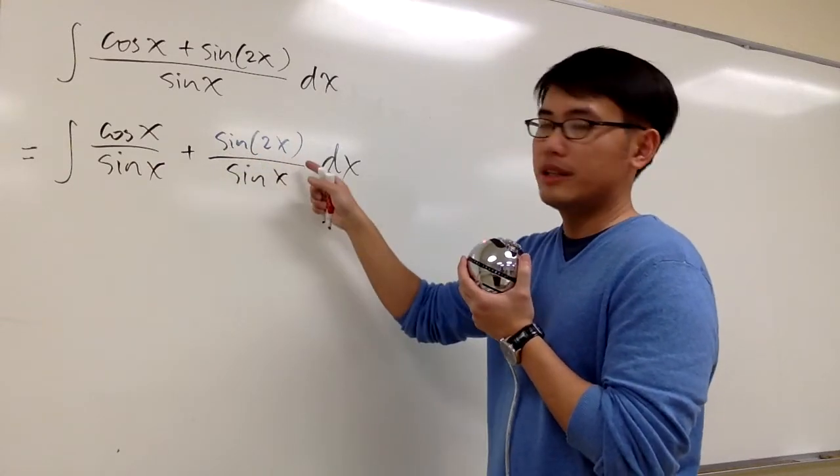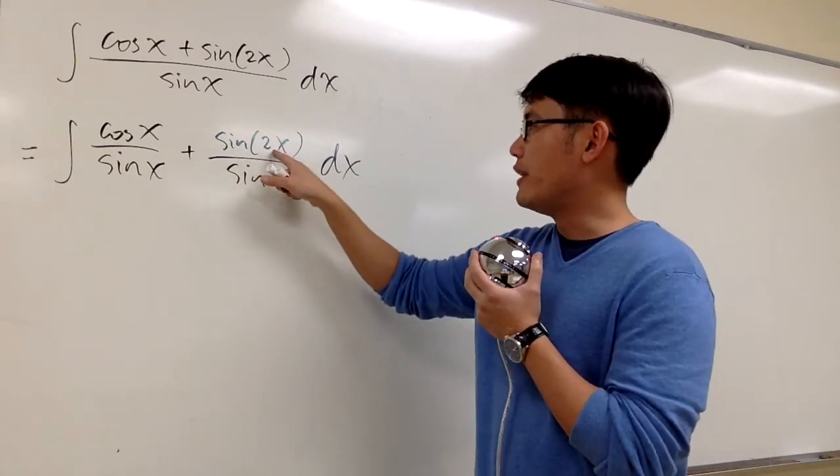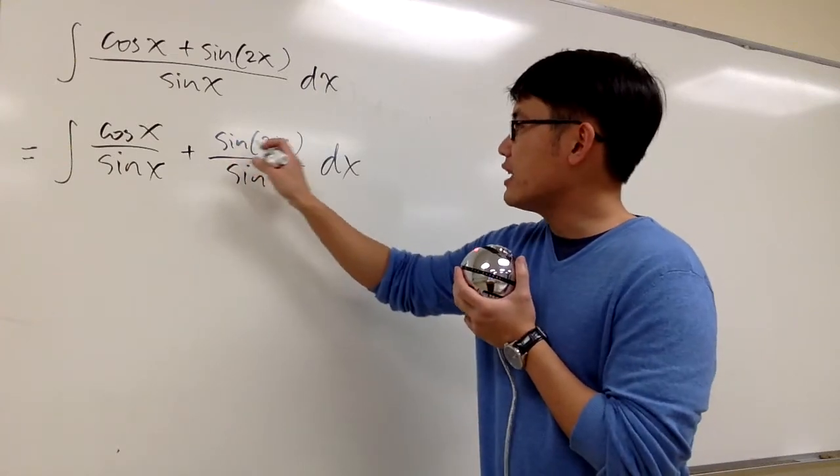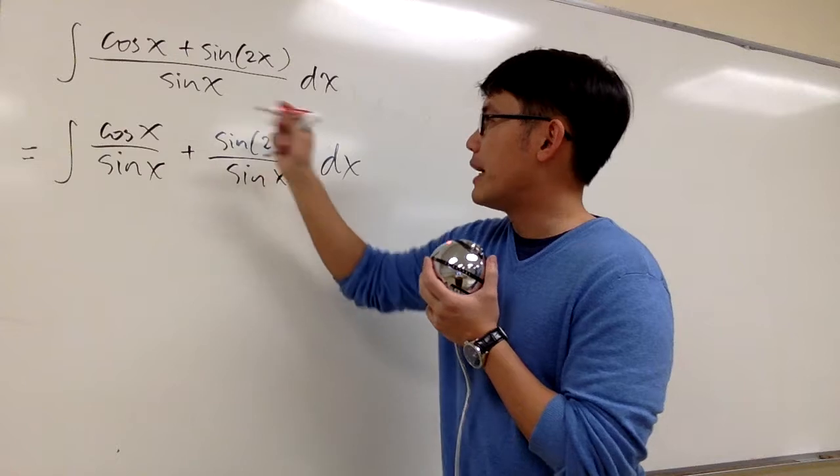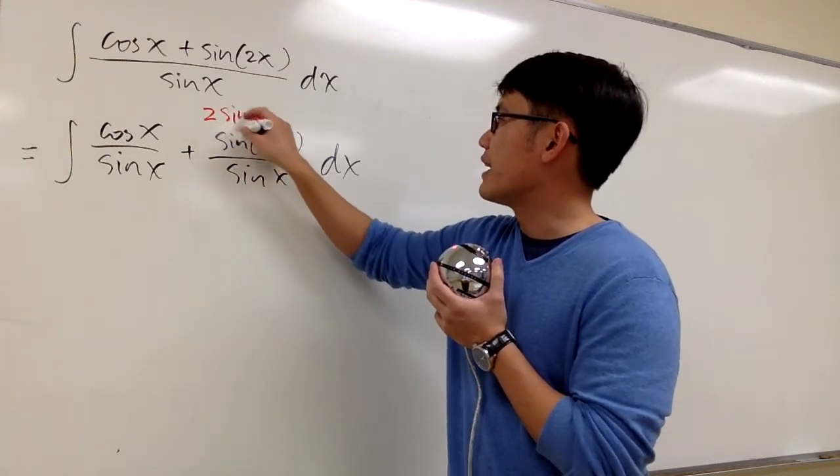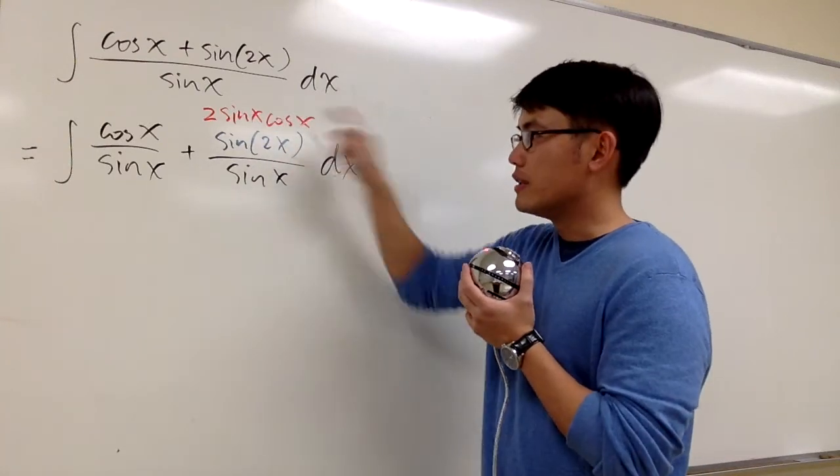What's sine of 2x? We cannot just cancel anything out right away because when the angles are different, we cannot do anything with it. Luckily, sine of 2x, by the double angle formula for sine, is the same as 2 sine x cosine x.